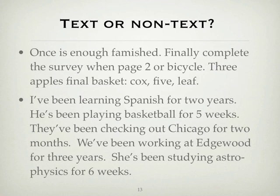The second paragraph — 'I've been learning Spanish for two years. He's been playing basketball for five weeks. They've been checking out Chicago for two months. We've been working in Edgewood for three years. She's been studying astrophysics for six weeks' — is not really a meaningful whole. The only commonality is grammatical parallelism. One clue to non-textuality is the difficulty of identifying a communicative context in which a speaker could produce these clauses in sequence — perhaps language-learning materials, but outside of that it's hard to find a context.